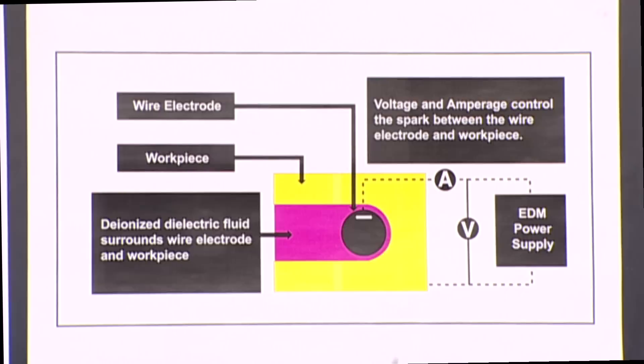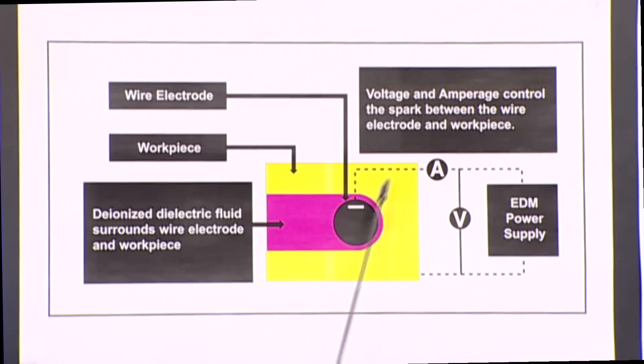When we get over here, we're going to explain what happens with the dielectric fluid. Now the voltage and the amperage control the spark between the wire electrode and the workpiece. So there's controlled sparking taking place over here.